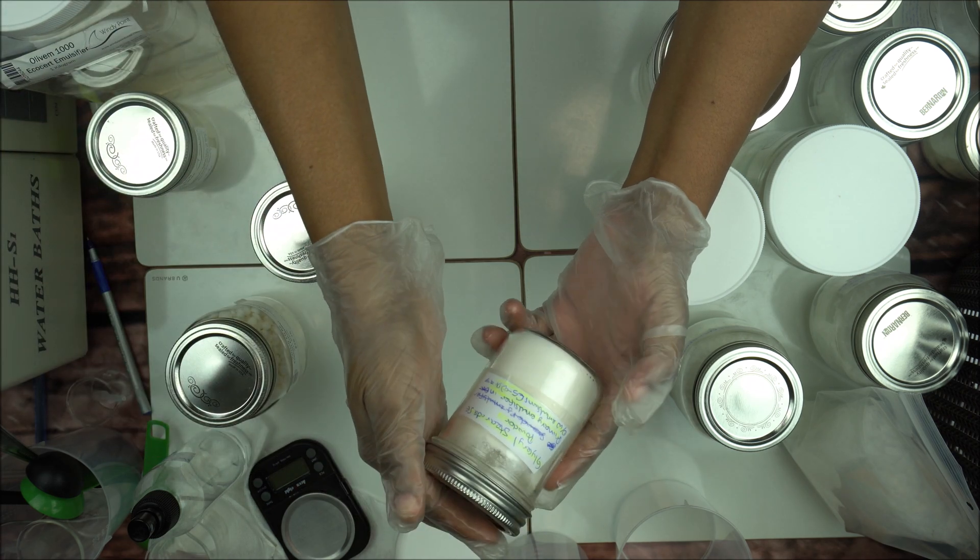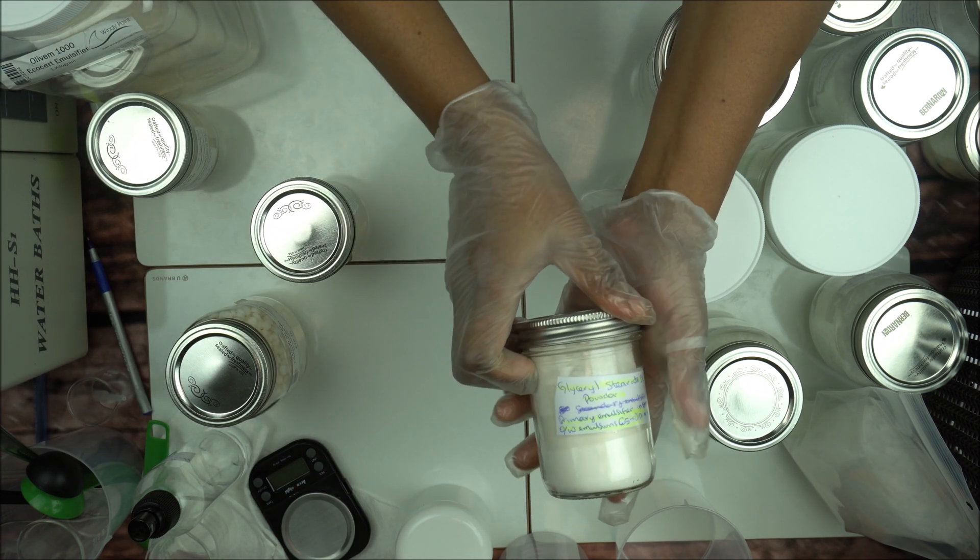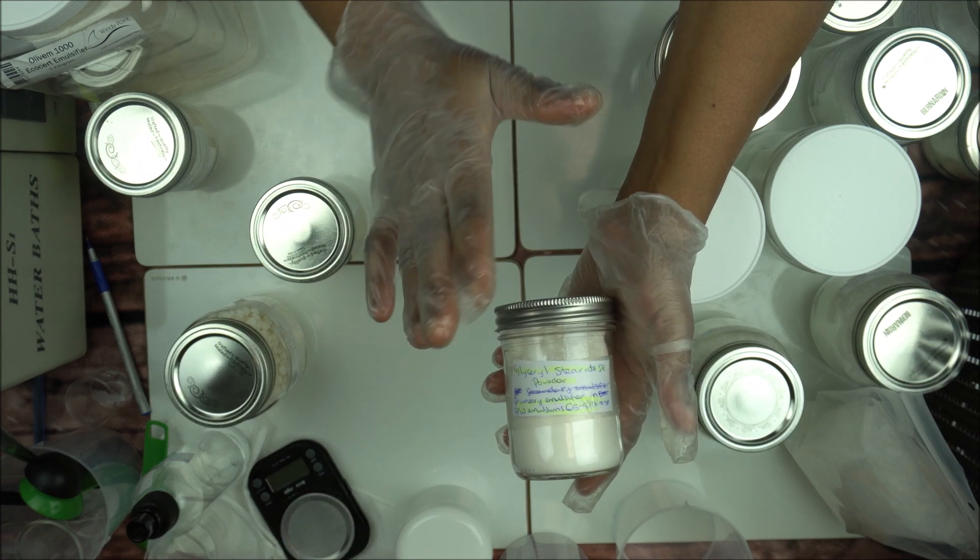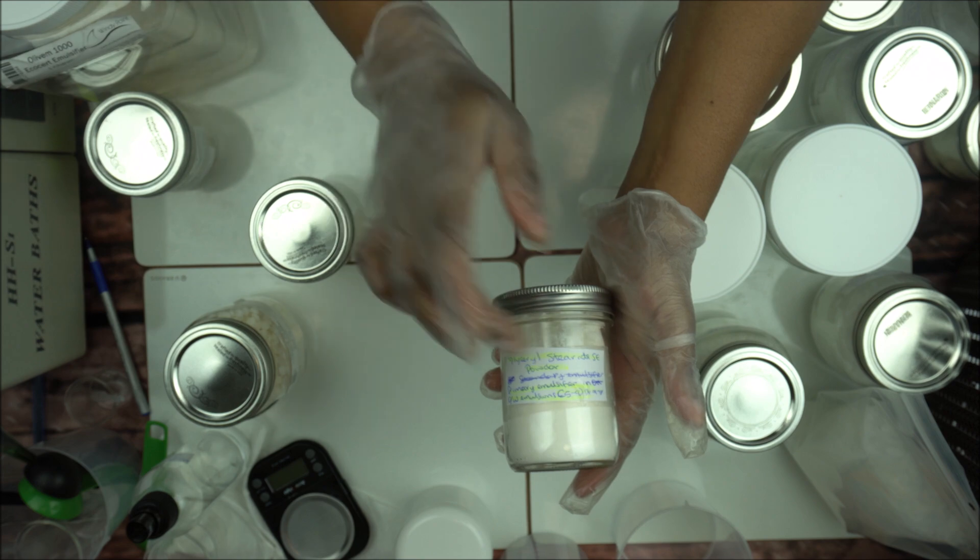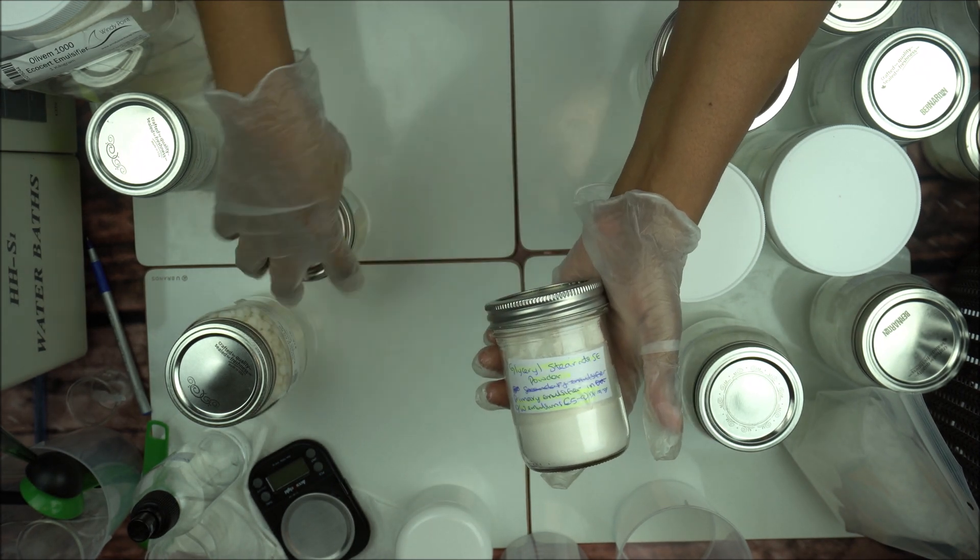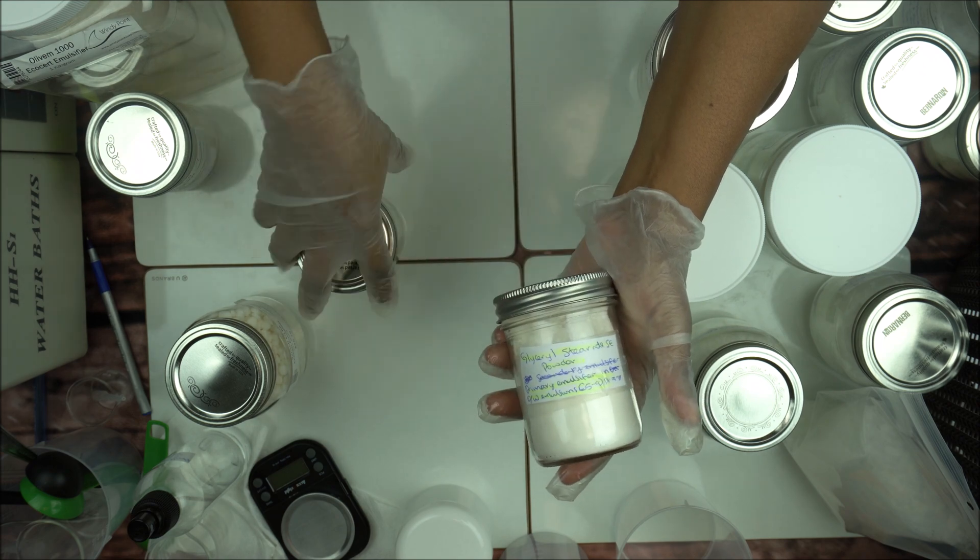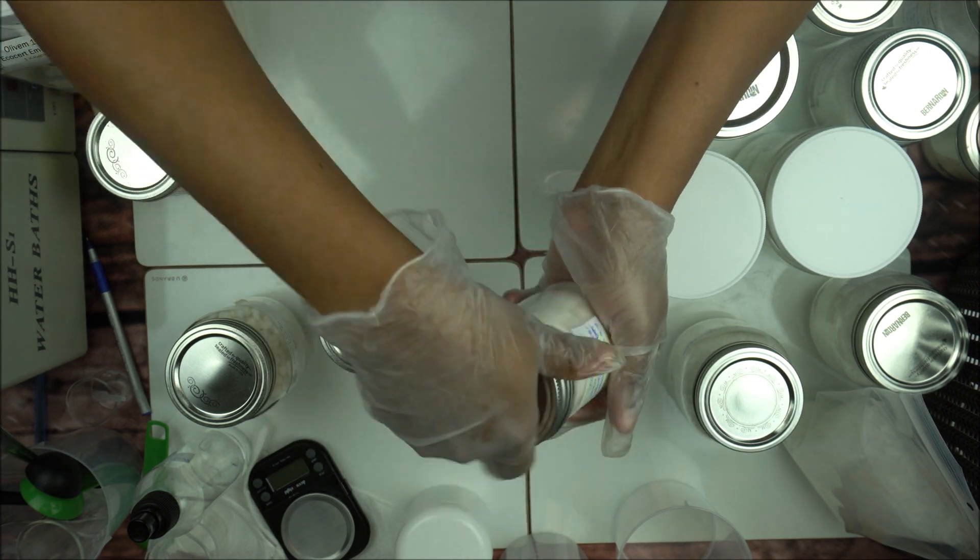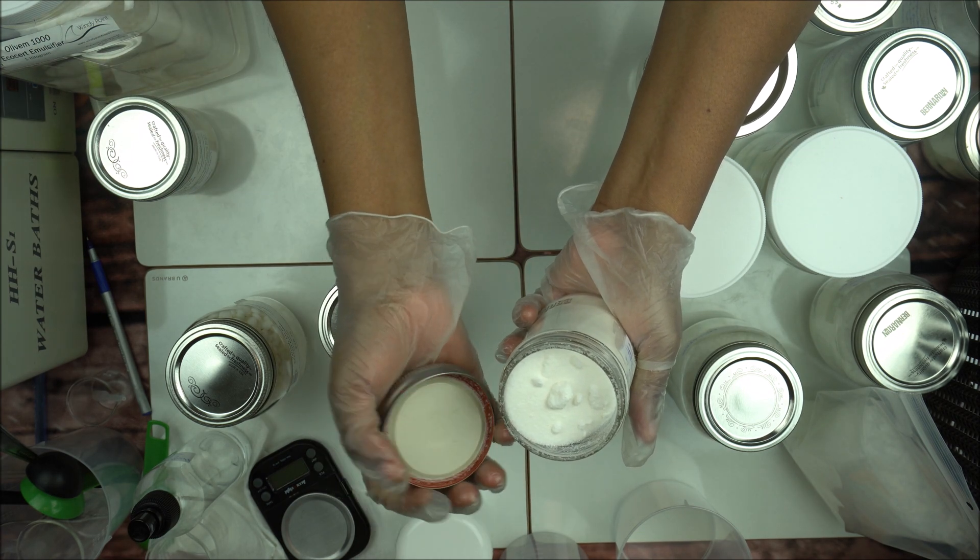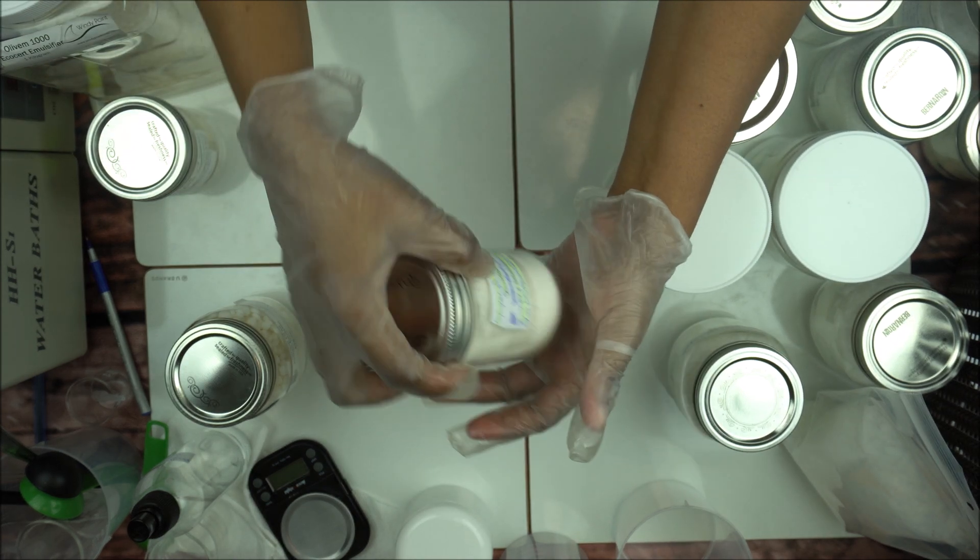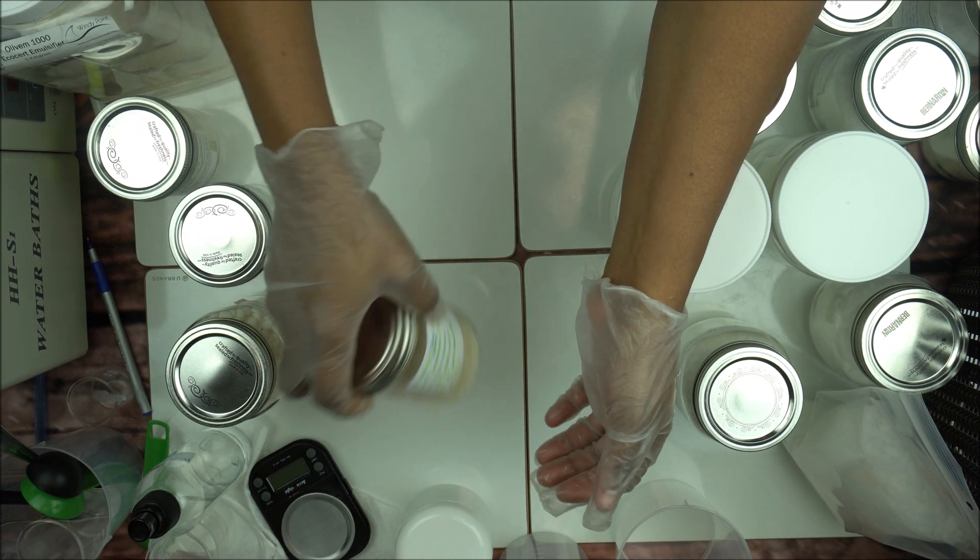Here is another emulsifier that can really make your product look pearly. You know when you see the pearl style in lotion? This is what causes it. It is called glycerin stearate. You can have it in the powder form or you can have it in flakes form. This is how it looks, that's the powder form. It looks a lot more like stearic acid.